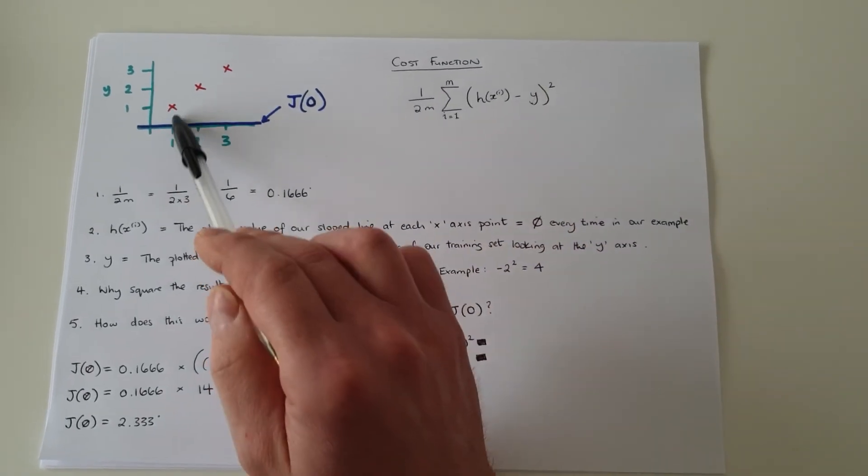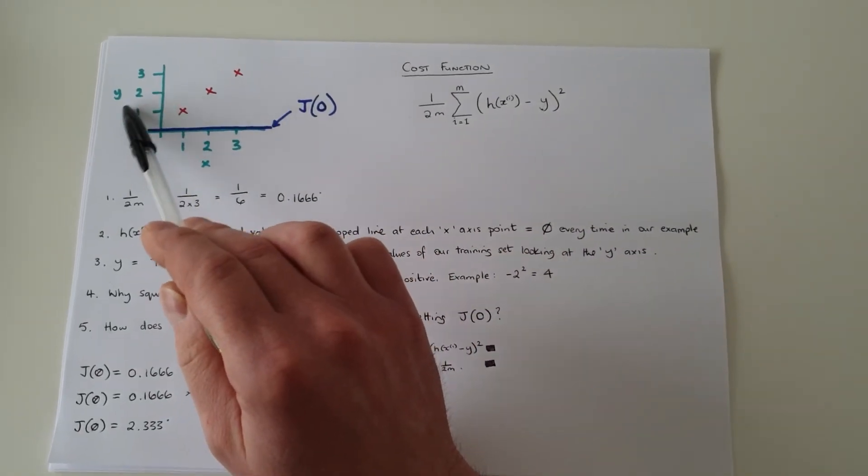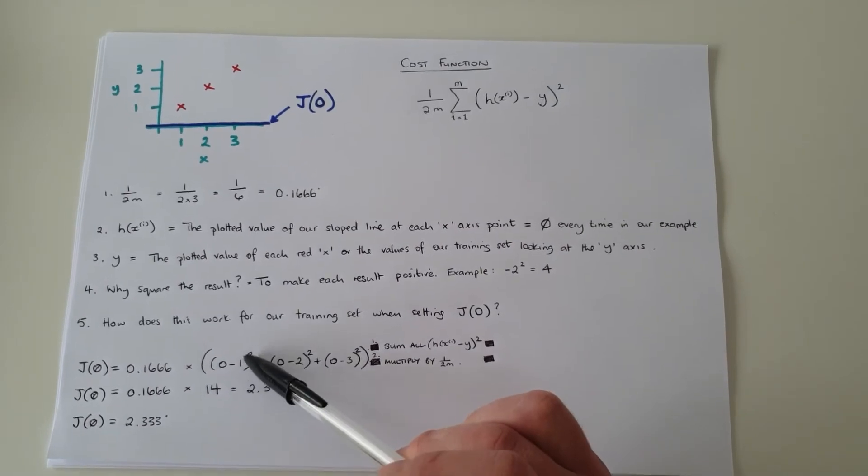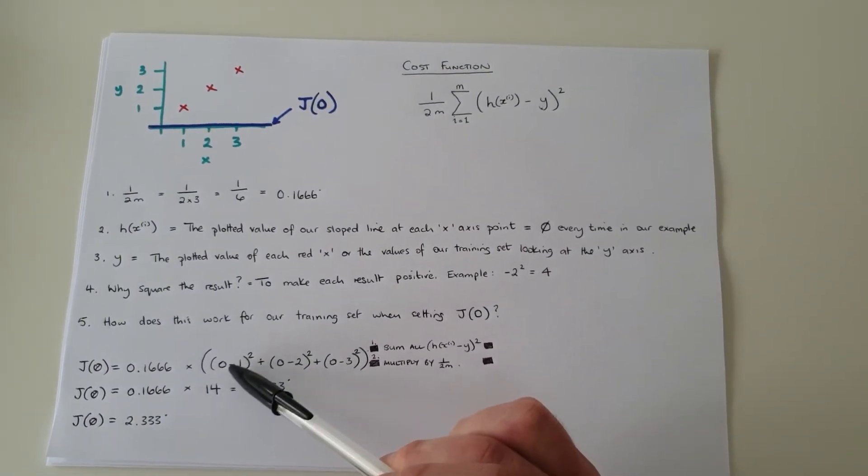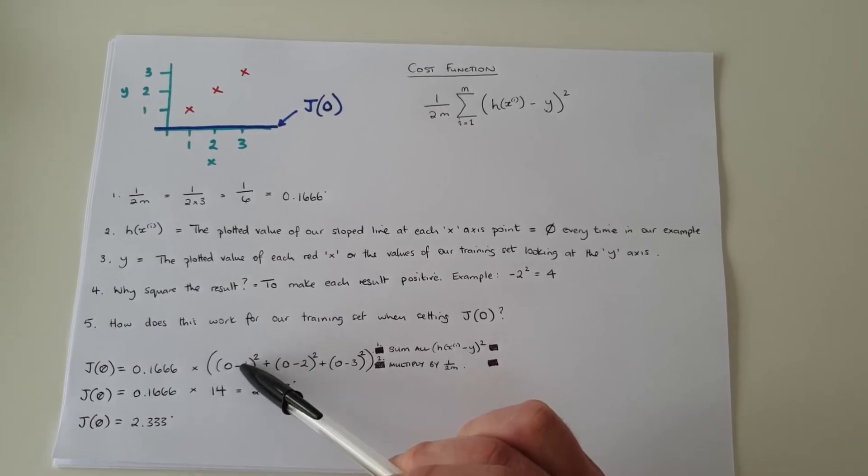Our y point, our little red x, is at one at this point. So that's where we get zero minus one, which will be negative one. And we'll square that, which will equal one.